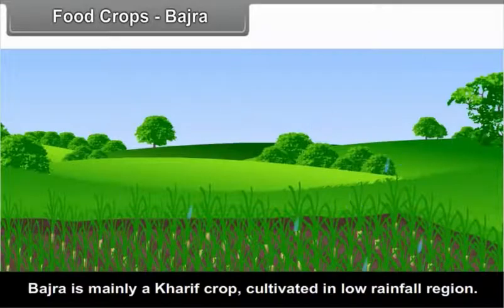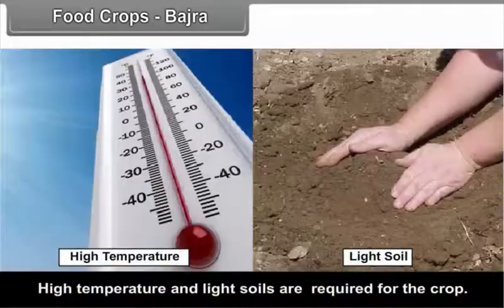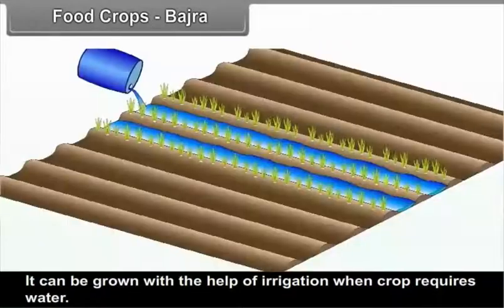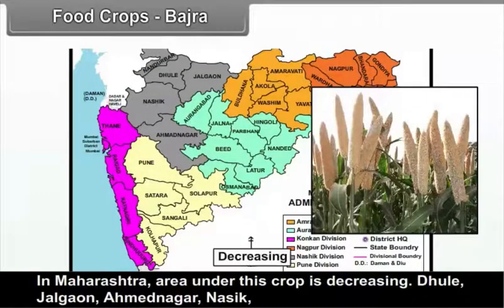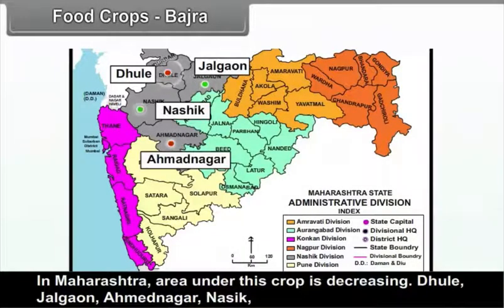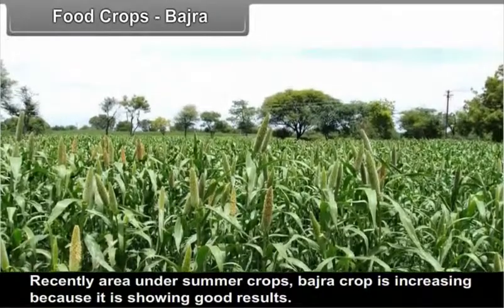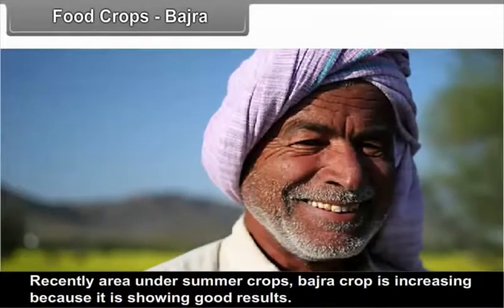Bajra is mainly a Kharif crop cultivated in low rainfall regions. High temperature and light soils are required. It can be grown with the help of irrigation when the crop requires water. The area under this crop in Maharashtra is decreasing. Dhule, Jalgao, Ahmadnagar, Nasik, Pune, and Satara are the main Bajra-producing districts. Recently, the area under summer Bajra is increasing as it is showing good results.